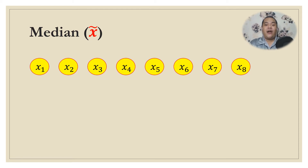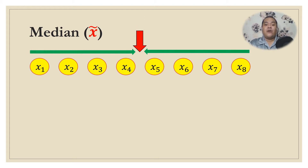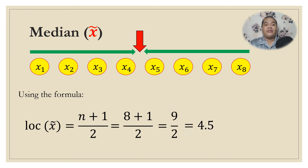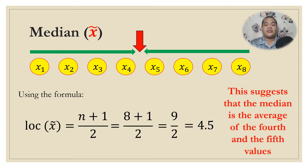What if there are an even number of scores? The median is found between x₄ and x₅. Using the formula: location = (8 + 1) / 2 = 9 / 2 = 4.5. This suggests that the median is the average of the fourth and fifth values.